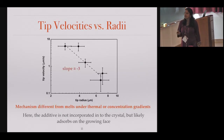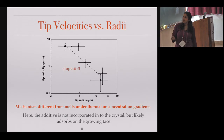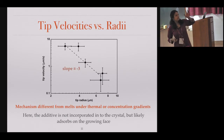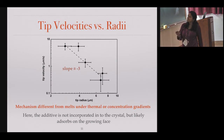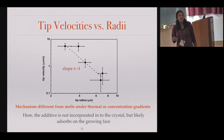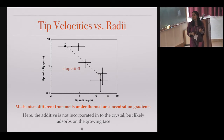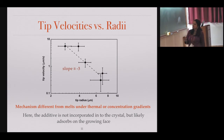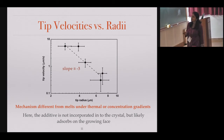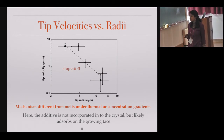If we combine the two plots — plotting tip velocity versus tip radius, similar to what is done in melt crystallization literature — we see that velocity is decreasing with tip radius with a slope of minus three. That is different from the scalings observed for melt crystallization, so the mechanisms we are observing must be quite different.